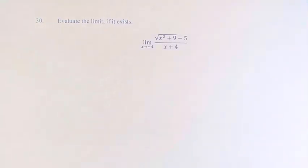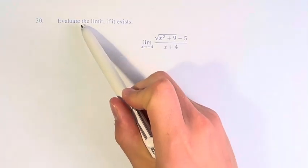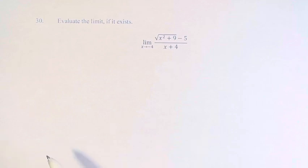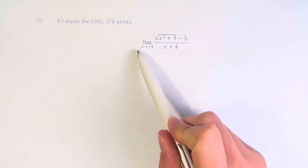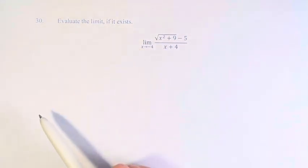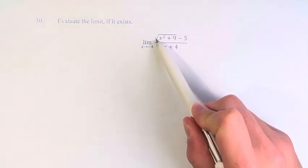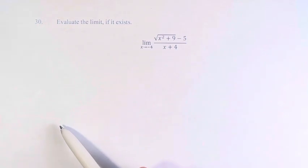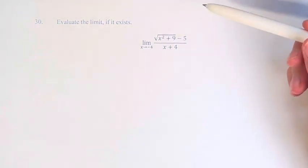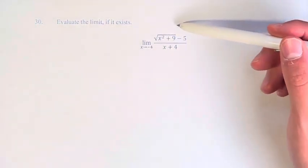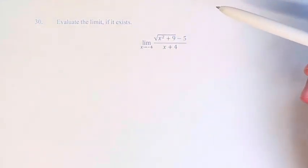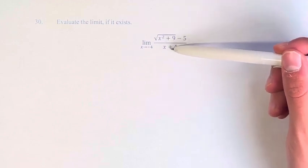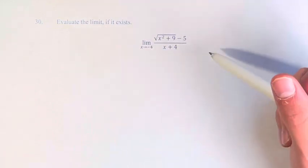Hello, and welcome back to another video. In this problem, we're asked to evaluate the limit if it exists. We have the limit as x approaches negative 4 of the square root of x squared plus 9 minus 5, over x plus 4. What we have to do here is convert this fraction into one where we're not just dividing by 0 if we plug in negative 4.